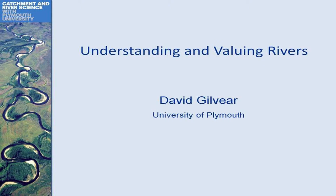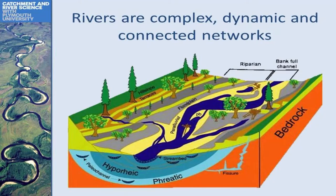Rivers are complex, dynamic, and connected networks, as you can see in this reach scale schematic here. They're complex within the floodplain and there's connectivity in terms of hydrology, chemistry, and ecology, both across the floodplain and with the groundwater beneath.